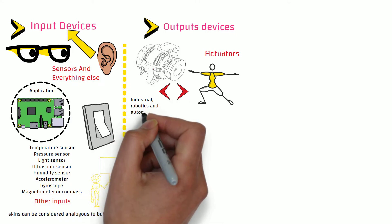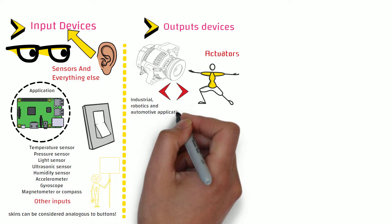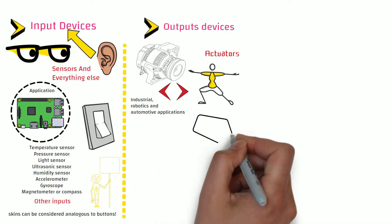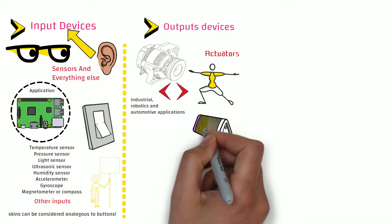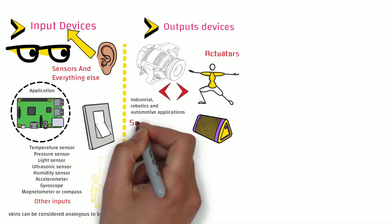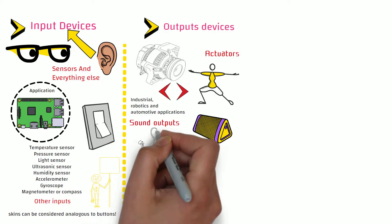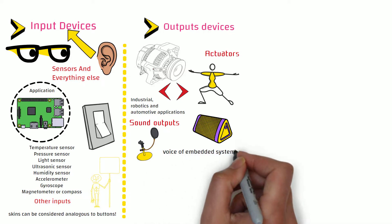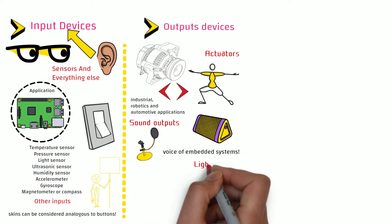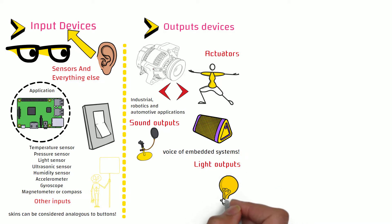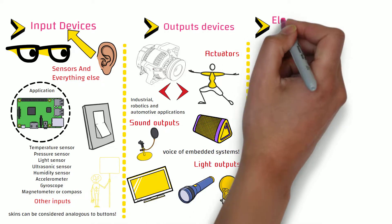Actuators are largely found in industrial, robotics, and automotive applications. Another example of output devices can be speakers, through which you can play sound whenever needed. So, I guess we can call them the voice of embedded systems. And, unlike humans, our embedded devices are also capable of producing lights in the form of LCD screen and LED lights.